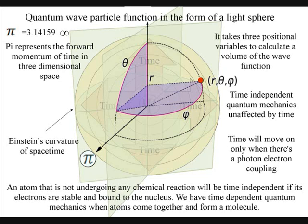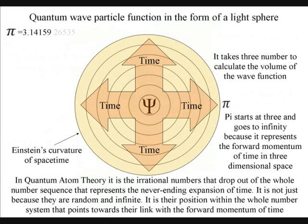We have Einstein's curvature of space-time because of the spherical shape of the quantum wave-particle function. This is why we have pi in the equations, representing the shape of the wave-function in three-dimensional space-time.